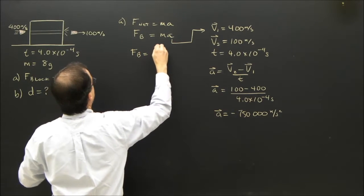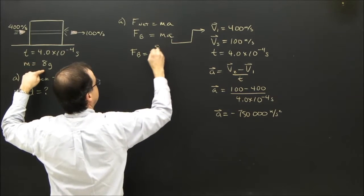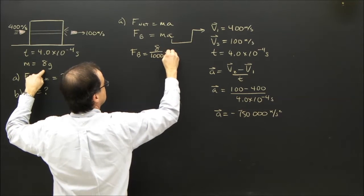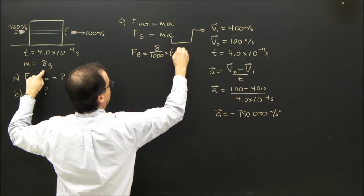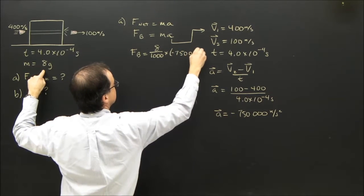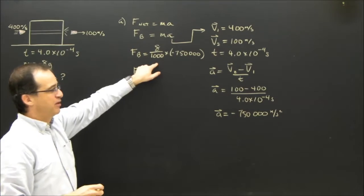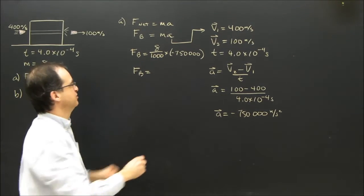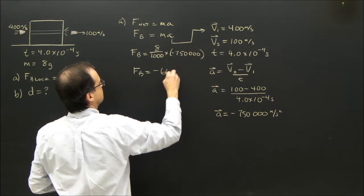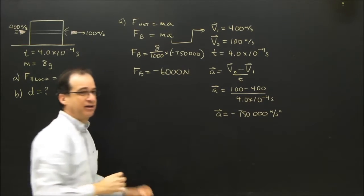FB equals the mass, 8 divided by 1,000, that turns into kilograms, times negative 750,000. The force on the block, 8 divided by 1,000 times negative 750,000, is negative 6,000 newtons, if I did that correctly.